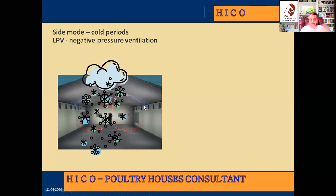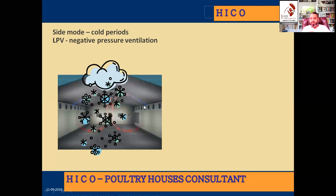You must remember that if your house temperature is more than 3.5 to 4 degrees Celsius above outside, you should stay in the side mode condition, taking air from the inlets. After that threshold you transition to tunnel ventilation. Side mode and minimum ventilation are similar, but with this key difference in how fans operate.